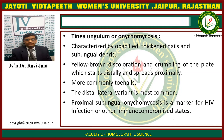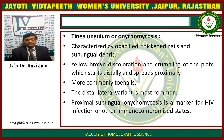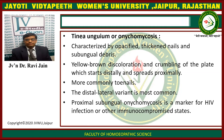Tinea unguium or onychomycosis: It is characterized by opacified thickened nails and subungual debris, yellow-brown discoloration and crumbling of the plate, which starts distally and spreads proximally. More commonly affects toenails; the distal lateral variant is more common. Proximal subungual onychomycosis is a marker of HIV infection or other immunocompromised states.